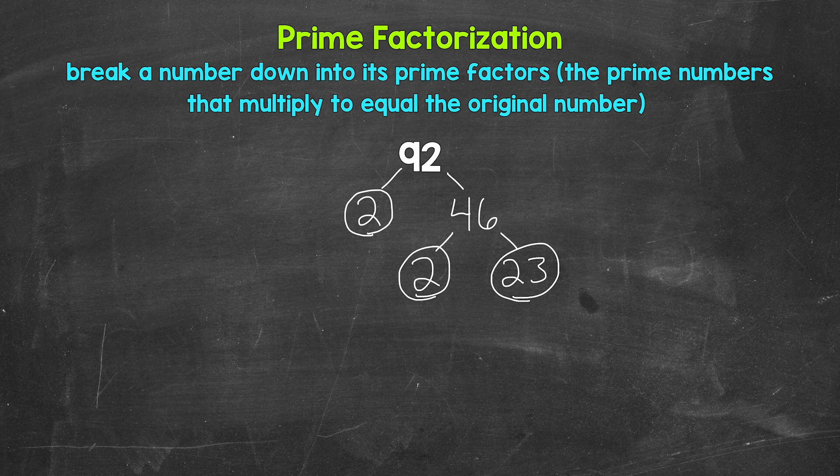And that's the prime factorization of 92. We don't have anything else that we can break down any further. We have all prime numbers.